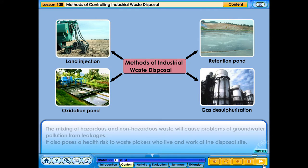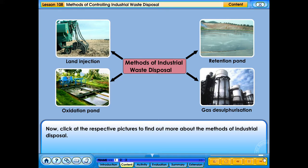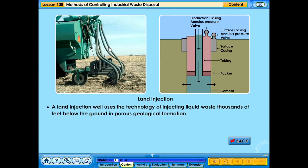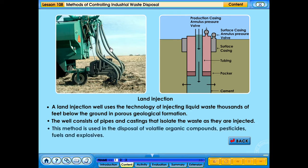What are the methods of industrial waste disposal? A land injection well uses the technology of injecting liquid waste thousands of feet below the ground in porous geological formation. The well consists of pipes and castings that isolate the waste as they are injected. This method is used in the disposal of volatile organic compounds, pesticides, fuels and explosives.